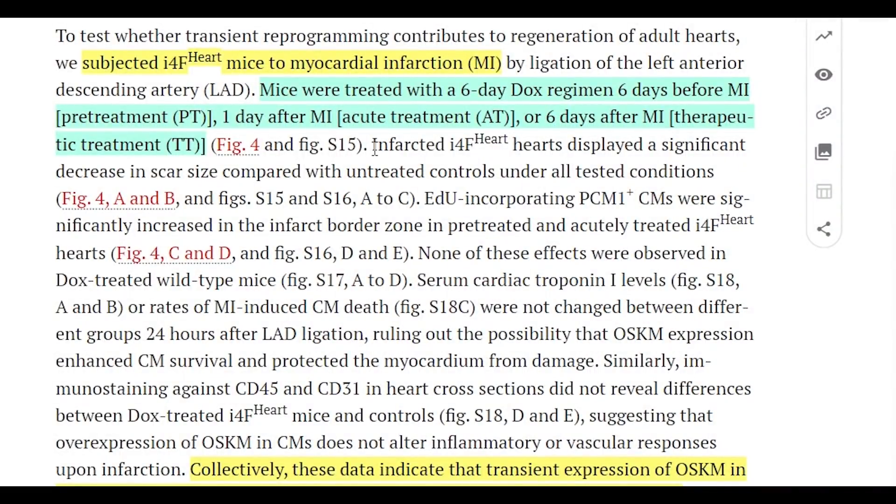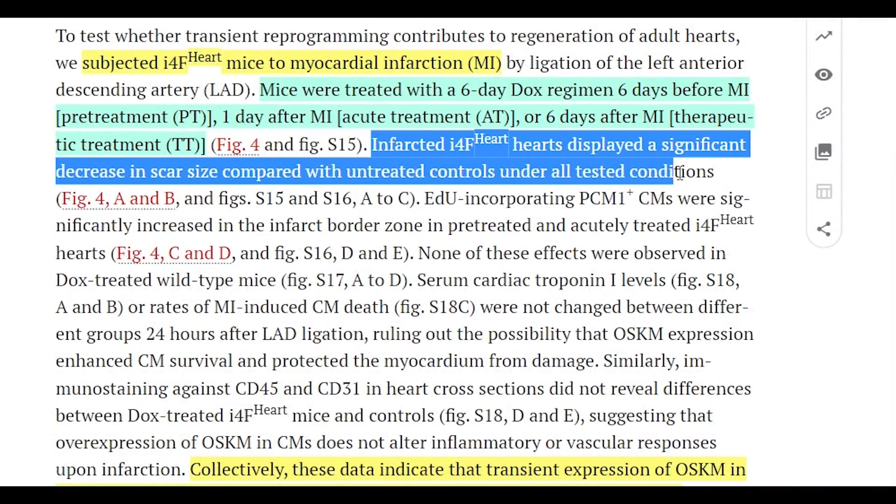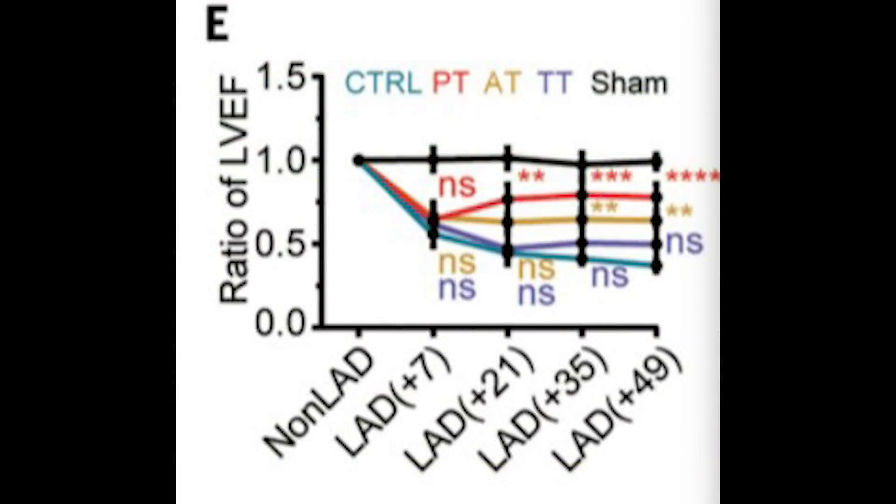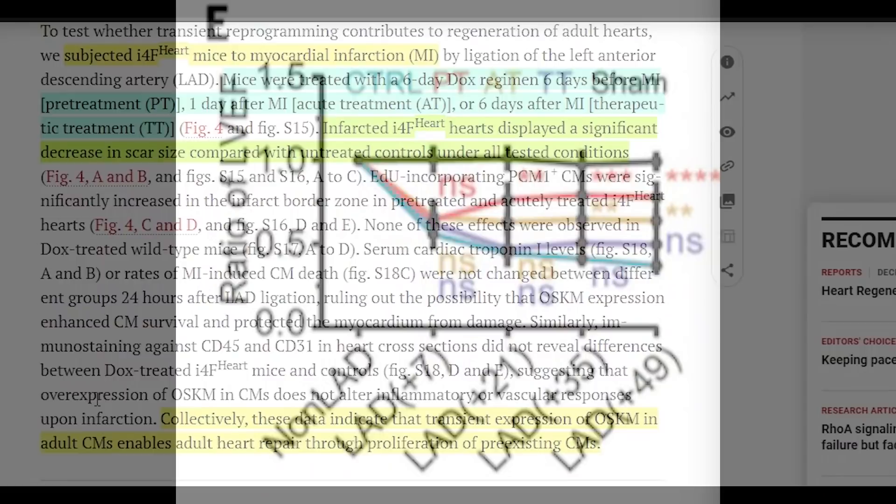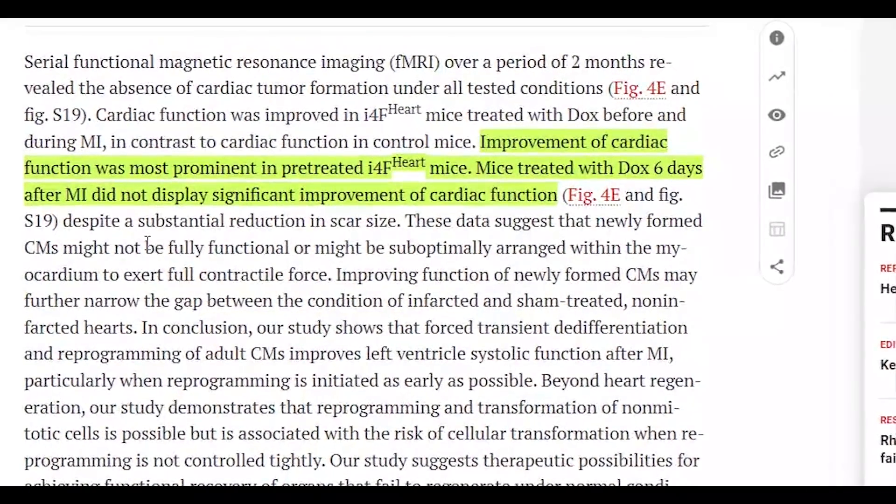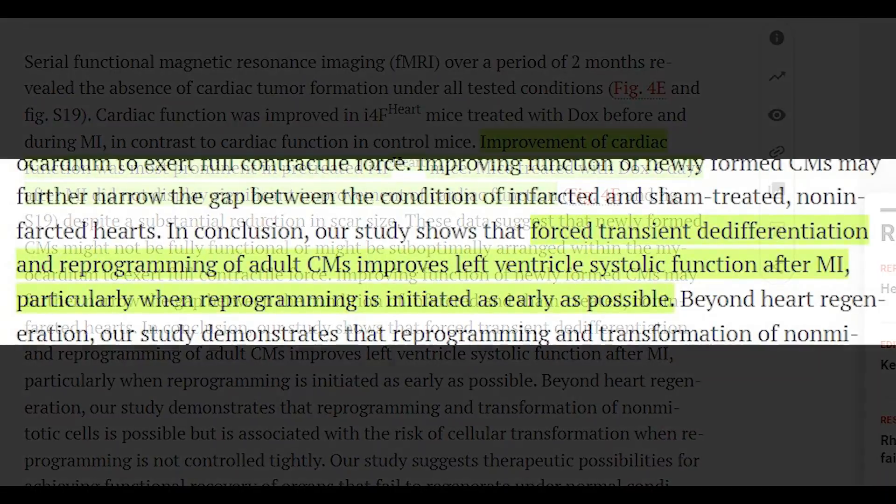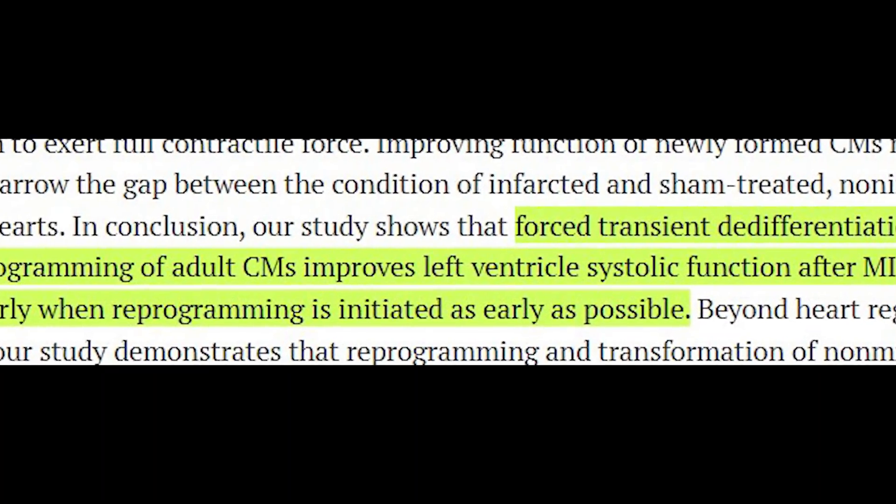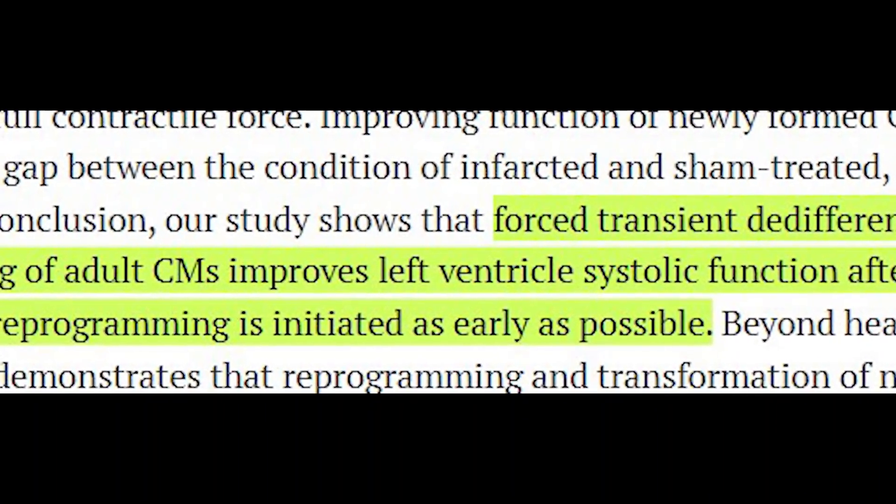And in all cases, they saw that the amount of scar tissue was reduced when there was expression in all of these cases, compared to the control mice. And they saw improved cardiac function in the mice treated with doxycycline before and during the myocardial infarction. So it seemed at this point that either the pre-treatment or the acute treatment was best in terms of heart regeneration. As they point out, adult cardiomyocytes improve left ventricle systolic function after myocardial infarction, particularly when reprogramming is initiated as early as possible.